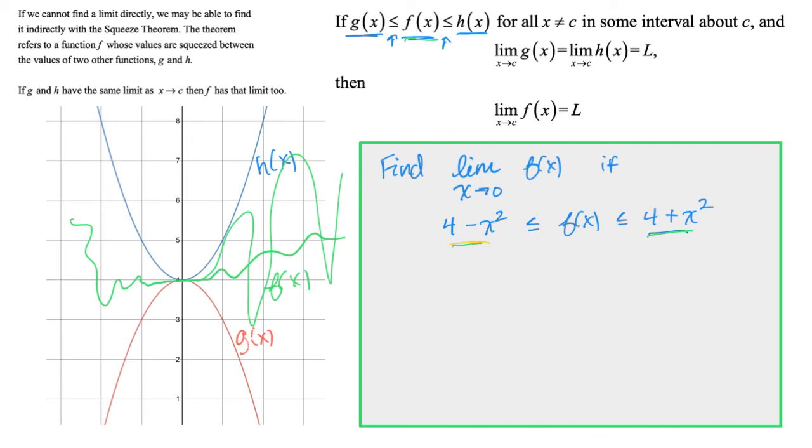Let's find each of these as the limit goes to zero. So the first thing we're going to do is we're going to find the limit as x goes to zero of four minus x squared. And we're going to find the limit as x goes to zero of four plus x squared.